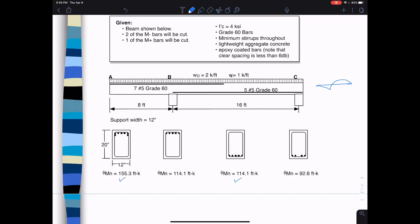I took that one bar out and calculated the reduced phi Mn. Everything here is given as I just said: two of the negative bars cut, one of the positive bars cut. Here's f'c, fy. I do have minimum stirrups, so you don't have to check that 12.5 point whatever I talked about earlier. There's lightweight aggregate concrete and epoxy coated bars.